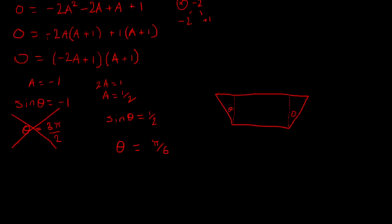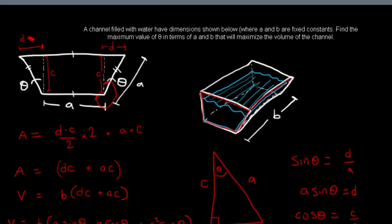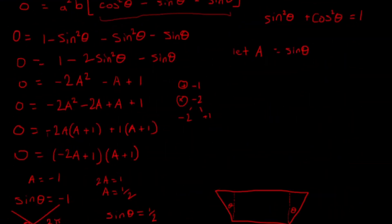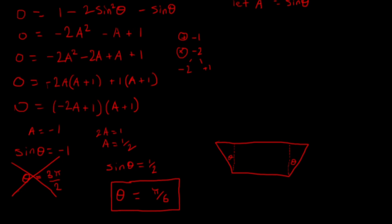So the final answer is θ = π/6. It turns out that no matter the depth B or the value of A, the value of theta that maximizes the volume of the channel is always π/6. To further verify this is a maximum, you can take the second derivative of the volume function and evaluate it at θ = π/6. If that value is negative, the function for volume is concave down, confirming it is indeed a maximum.